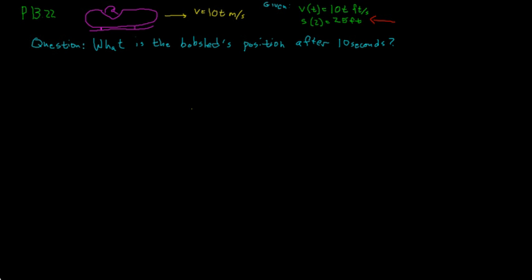I've moved on to the dynamics section and right now I'm looking at problem 13.22 which reads: the velocity of a bobsled is v equals 10t feet per second. When t equals 2 seconds, the position of the sled is s equals 25 feet. What is the position when t equals 10 seconds?